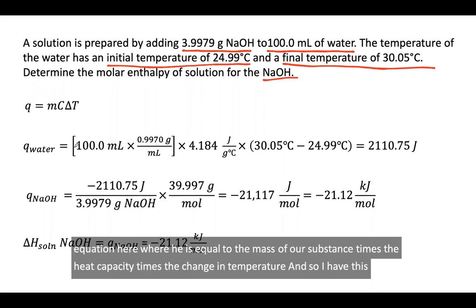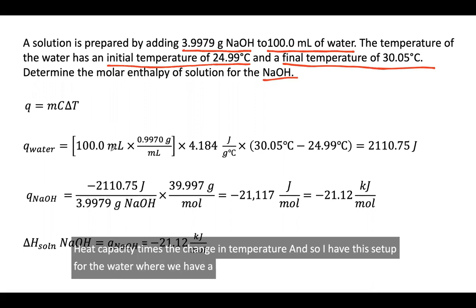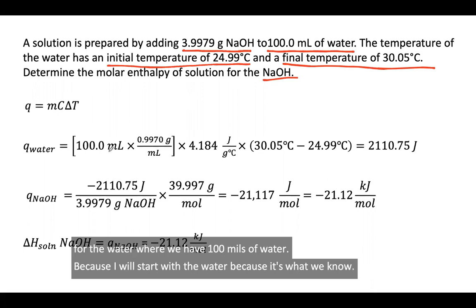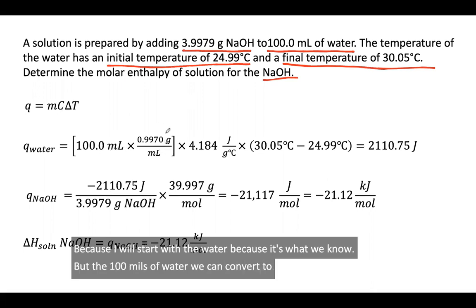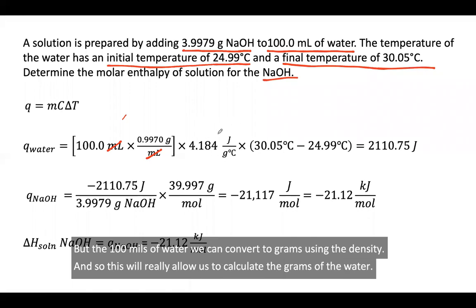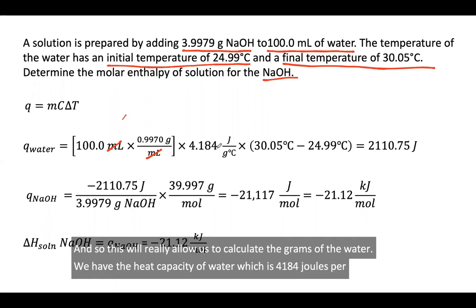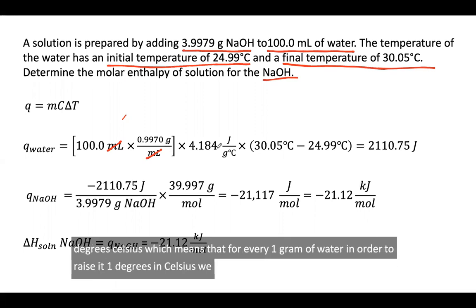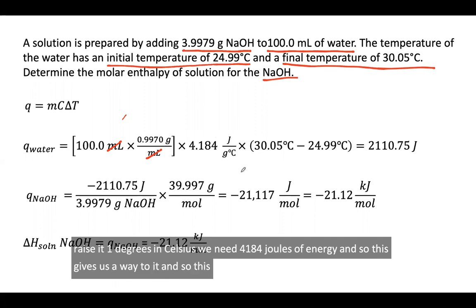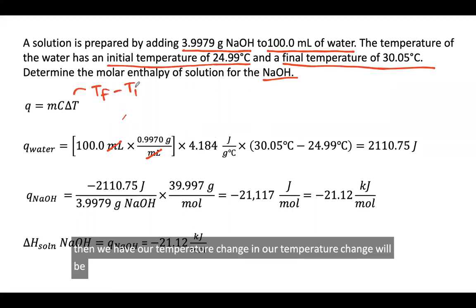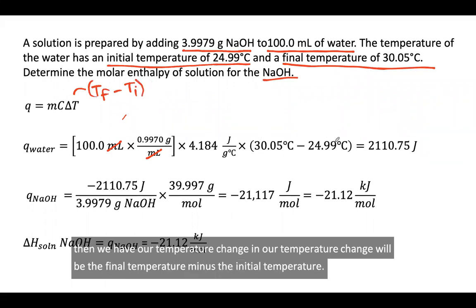Because we're talking about heat, we use the equation: heat equals mass times heat capacity times change in temperature (q = mcΔT). We start with the water because it's what we know. The 100 mL of water can be converted to grams using density. The heat capacity of water is 4.184 J/(g·°C), meaning for every one gram of water, 4.184 joules are needed to raise the temperature by one degree Celsius. The temperature change is the final temperature minus the initial temperature.